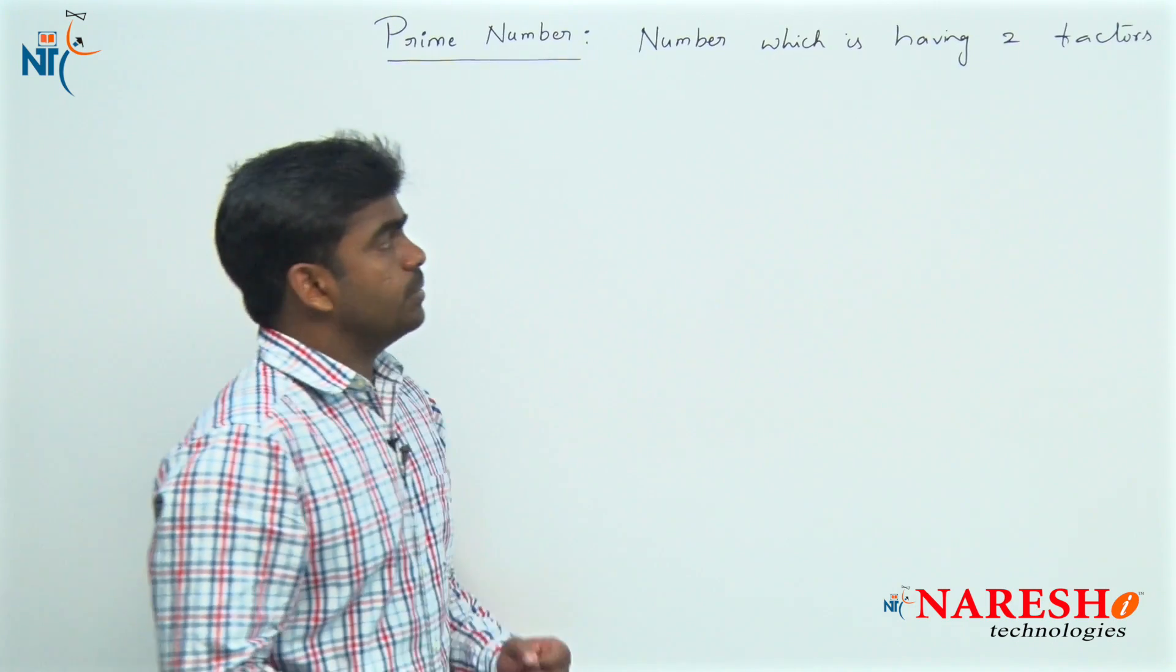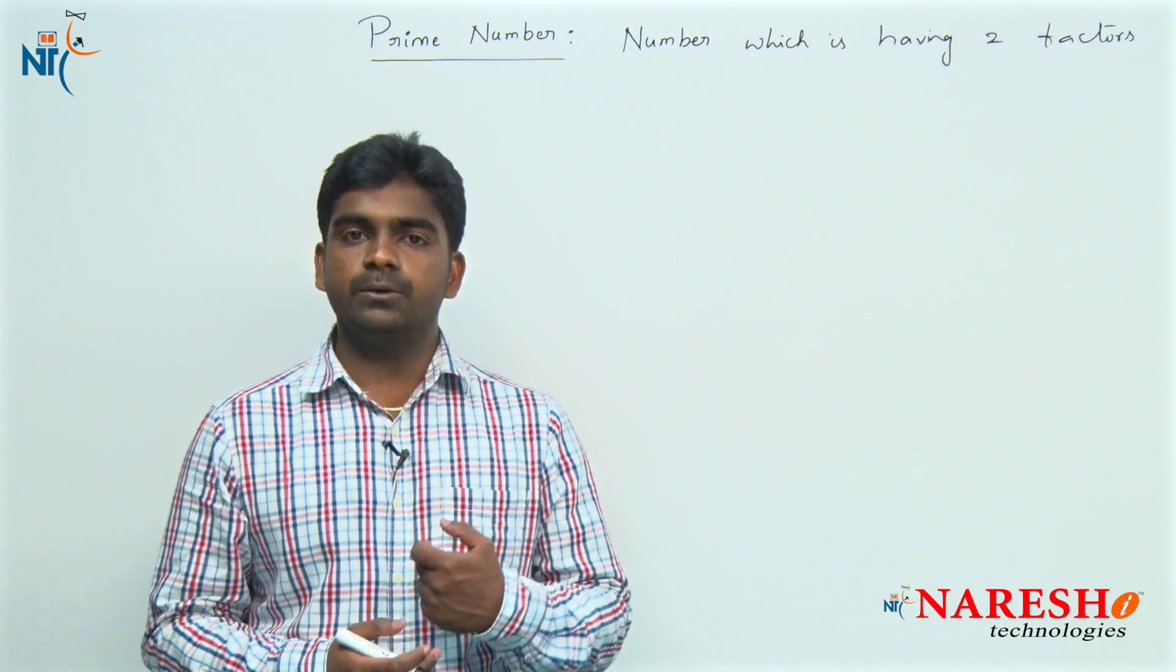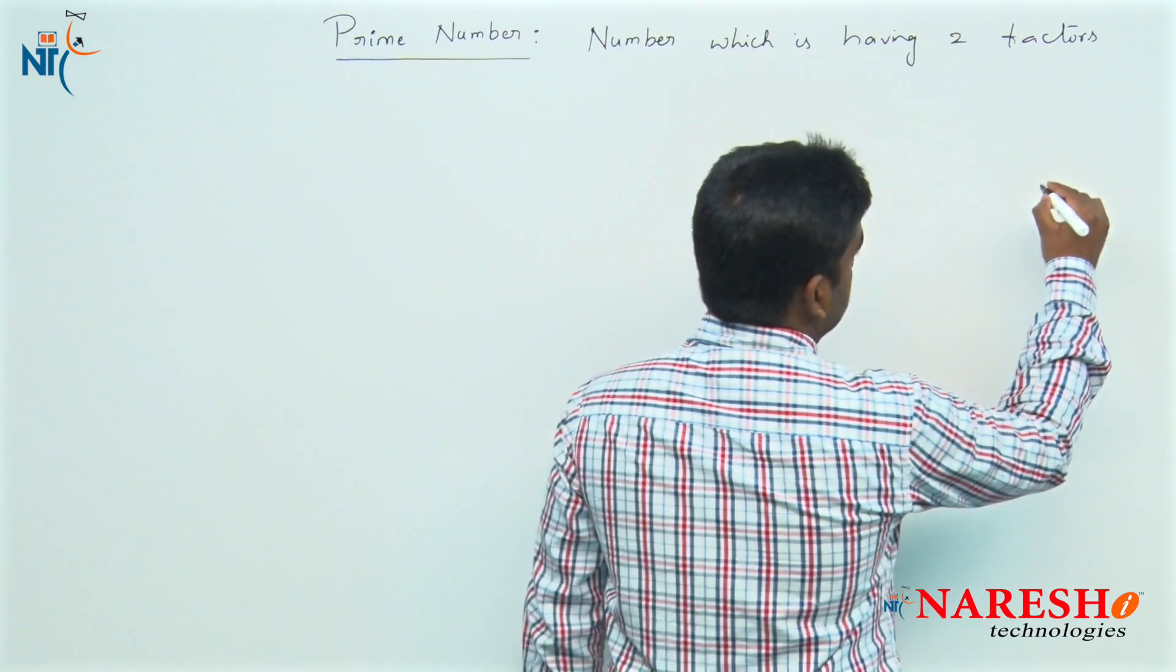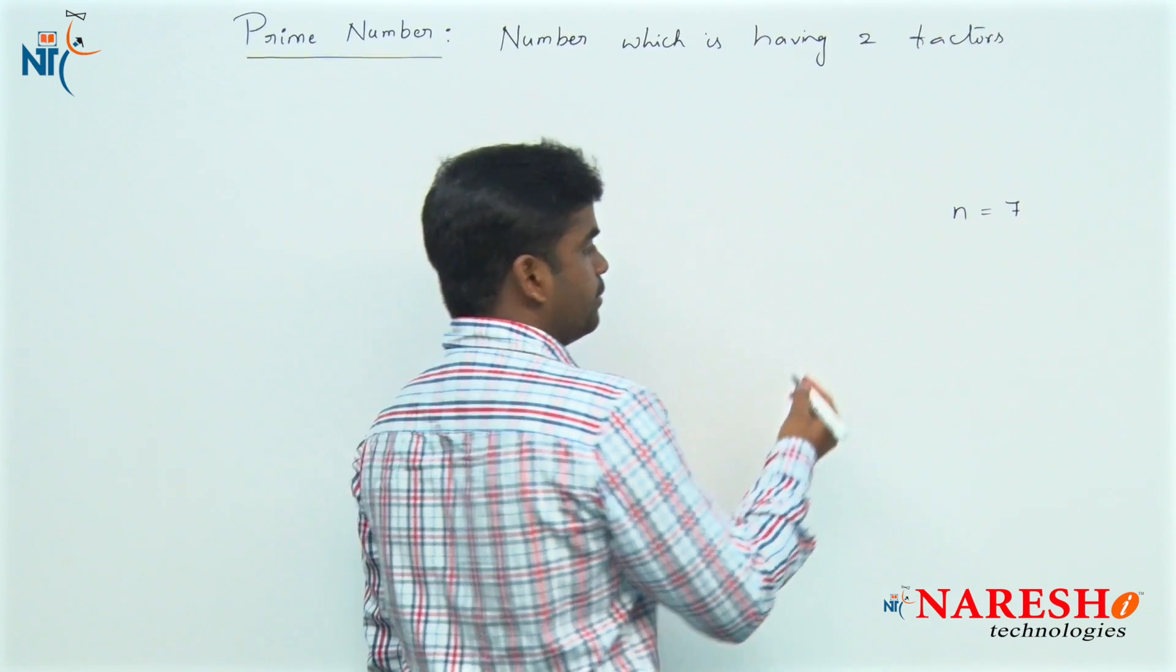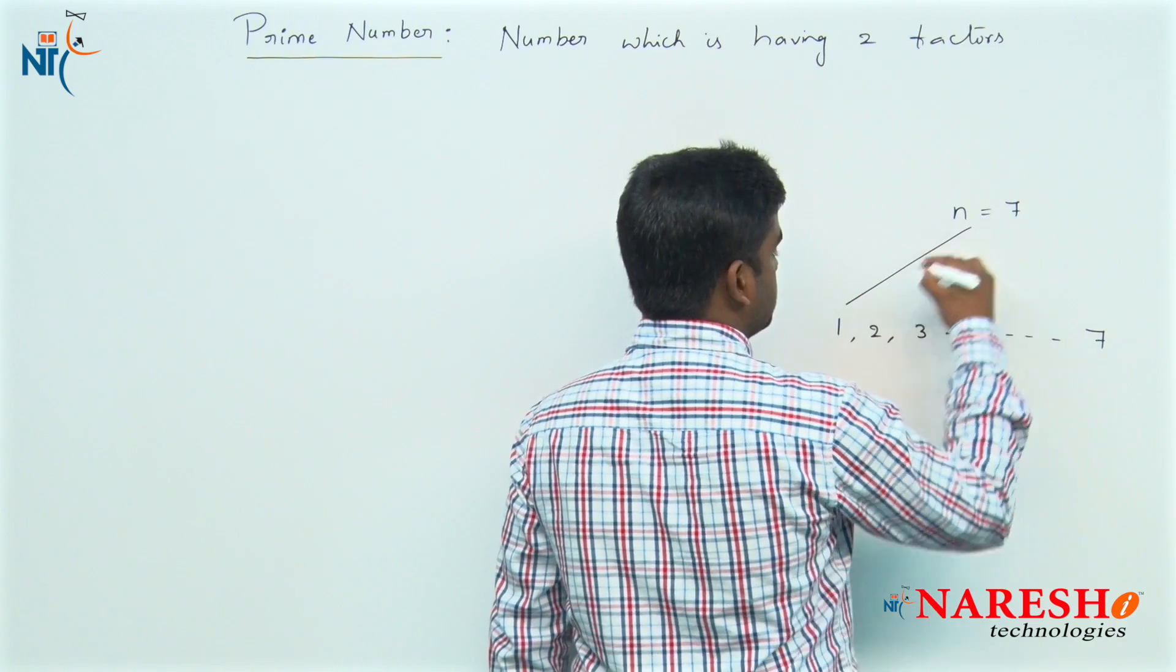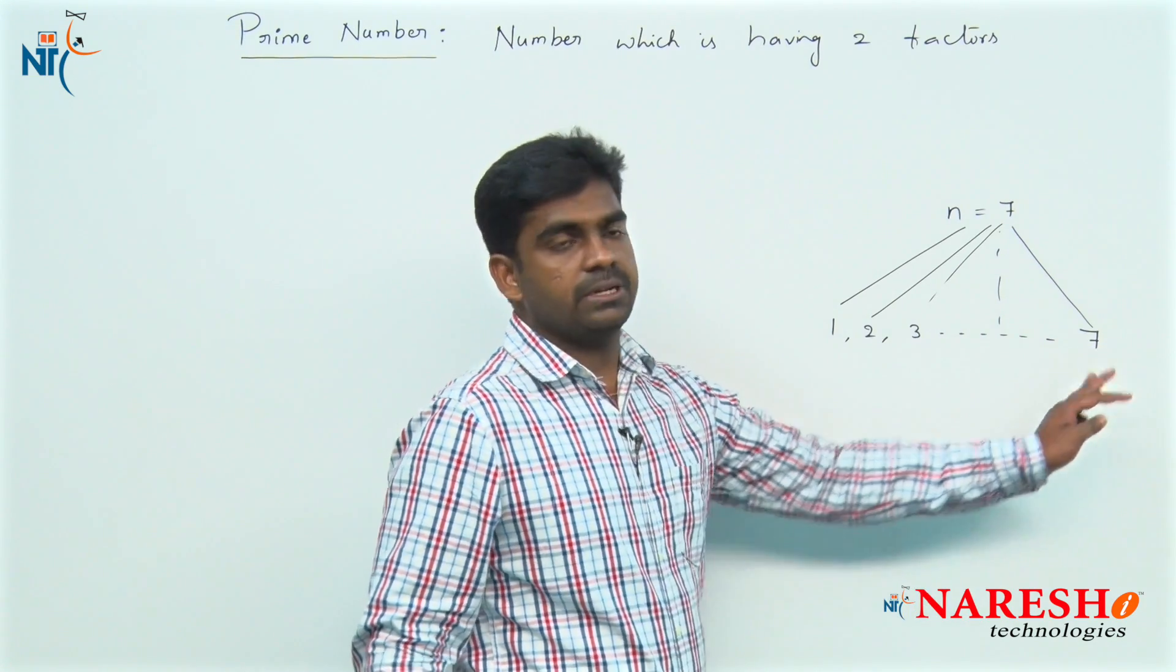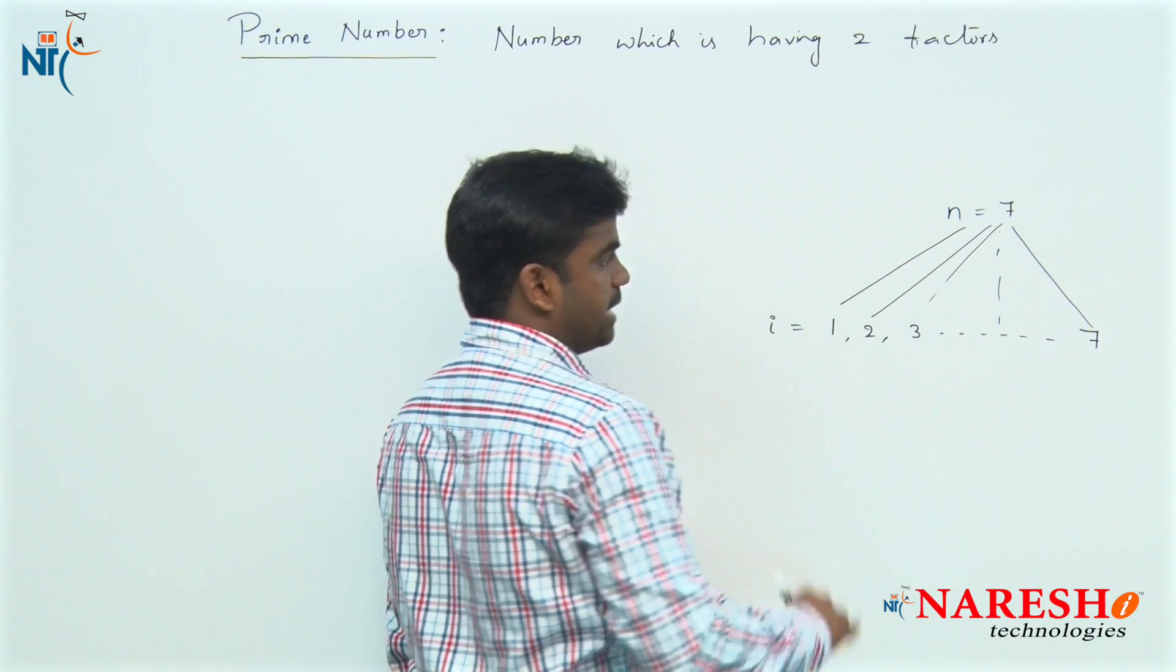While writing the program, first we need to read the N value, we need to read one number. And how many factors are present to that number, we need to check. For example, if you take N value suppose 7, from 1 to 7 how many factors are there we need to check. How to repeat this 1 to 7? With the help of one loop, suppose I value.